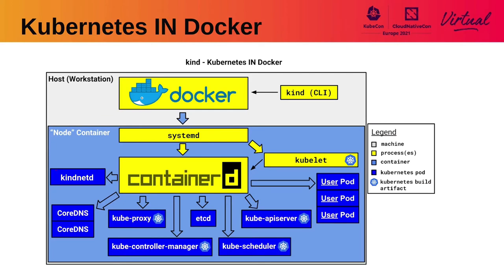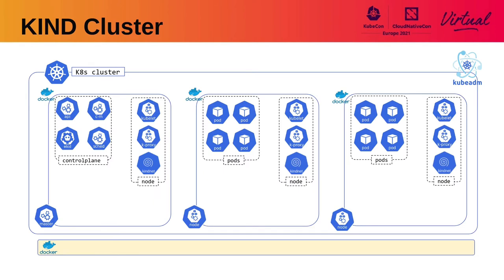The way that Kind works is using special node images. These node images are container images that come preloaded with systemd, kubelet, and containerd binaries, and the rest of the Kubernetes component container images. Kind uses these images to create a cluster and once the containers are running, it runs kubeadm on top to configure the cluster. In the slide you can see the most common deployment of Kind for testing, with one control plane node and two worker nodes.